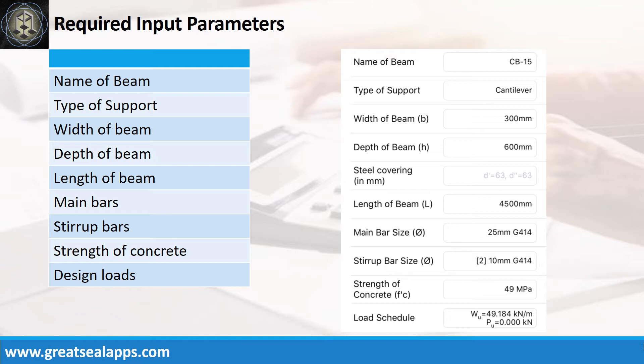Main bars, 25 mm bar at grade 414. Stirrup bars, 10 mm bar at grade 414. Strength of concrete, 49 MPa. Factored uniform load, 49.184 kN/m.